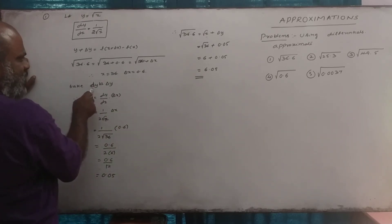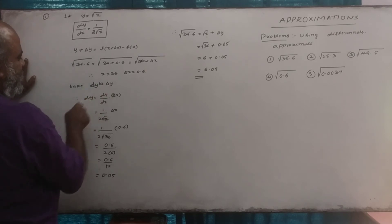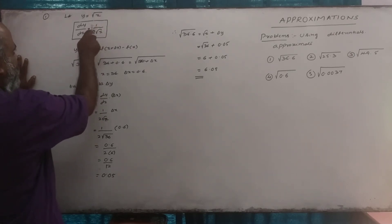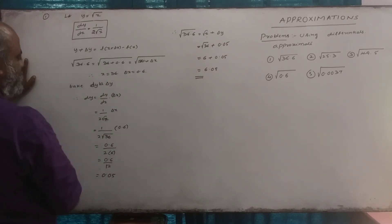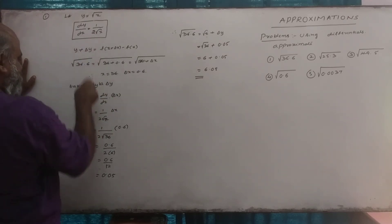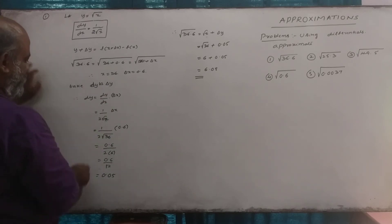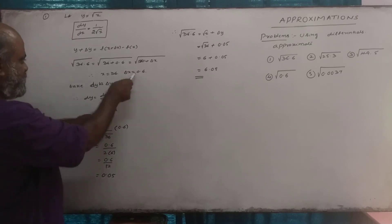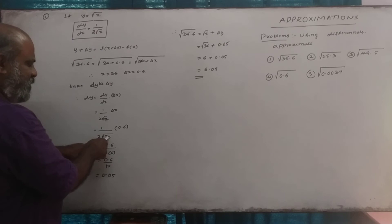By the small increment method, delta y is approximately equal to dy. Here x is 36, which is a perfect square, and the next value is x plus delta x where delta x equals 0.6.